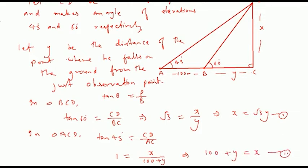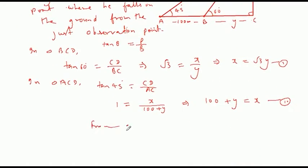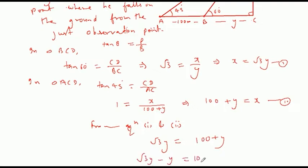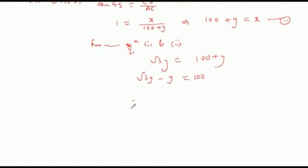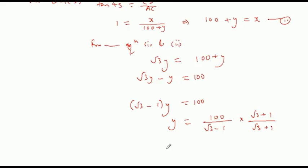From equations 1 and 2: root 3 · y = 100 + y. Therefore root 3 · y minus y = 100, which gives (root 3 minus 1) · y = 100, so y = 100 / (root 3 minus 1). Rationalizing: y = 100 · (root 3 + 1) / (root 3 squared minus 1 squared).